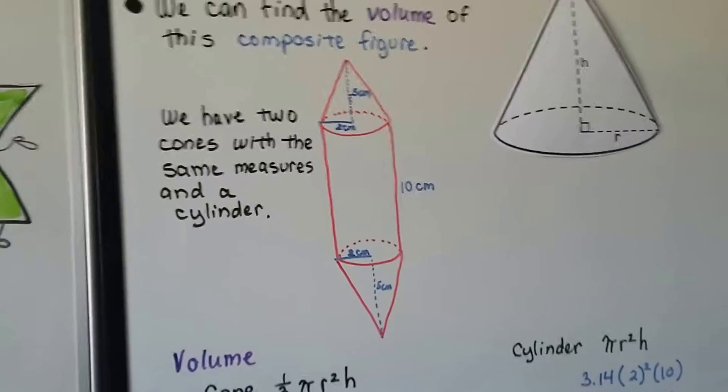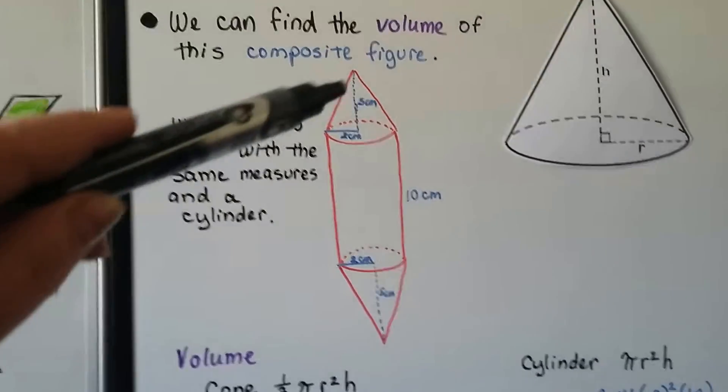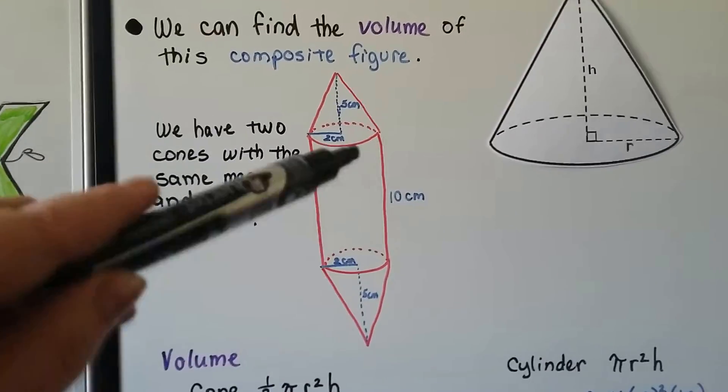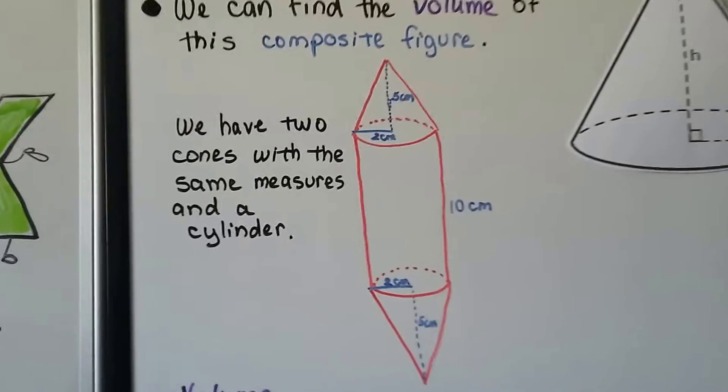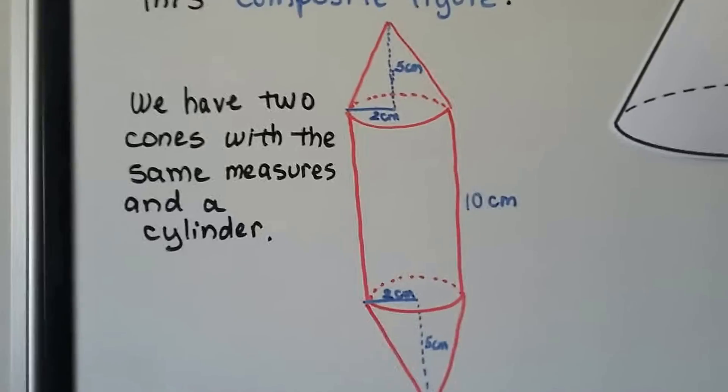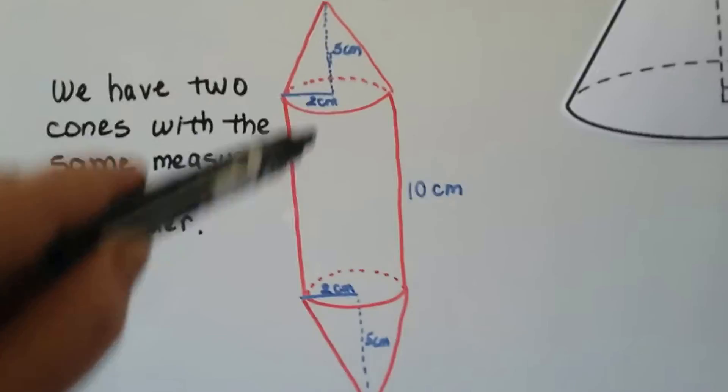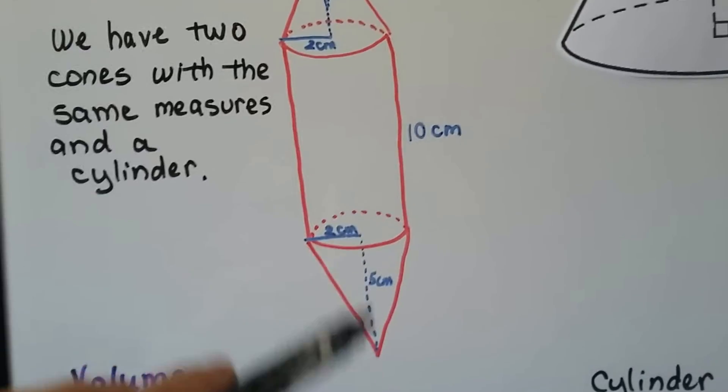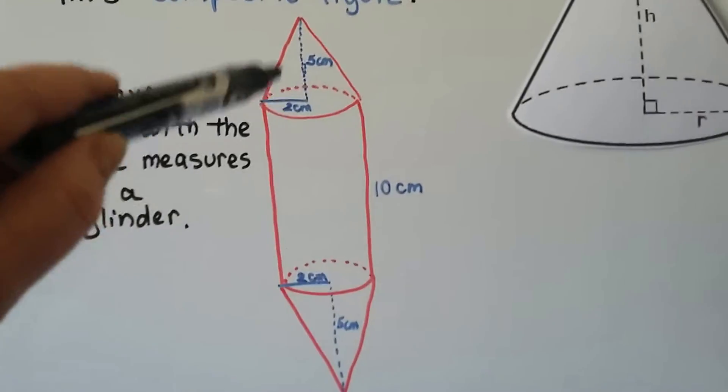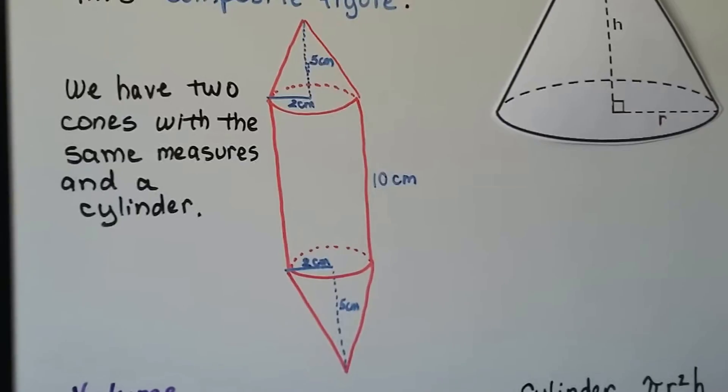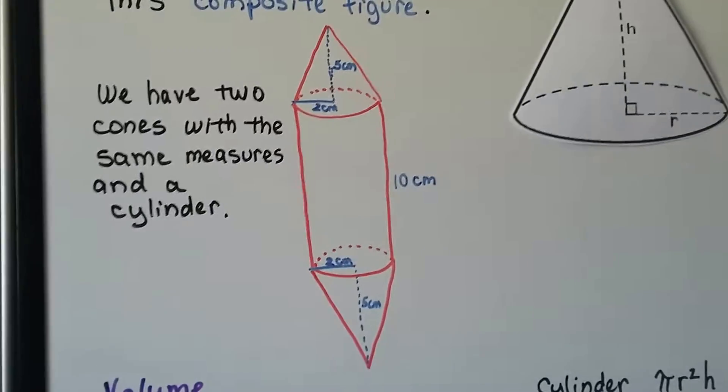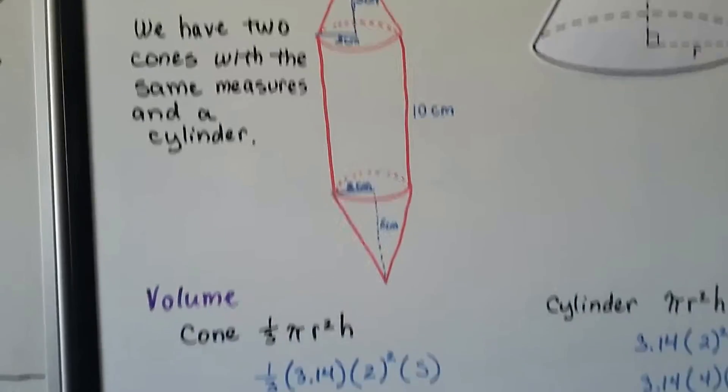We can find the volume of this composite figure. If you look at it, it's got a cone on the top and a cone on the bottom with a cylinder in the middle. And we have two cones with the same measures and a cylinder. Look, it's got a 2 centimeter radius and a 5 centimeter height, both cones. So, if we find the volume of this one, we could just double it, save ourselves some time, and then do the volume of the cylinder.